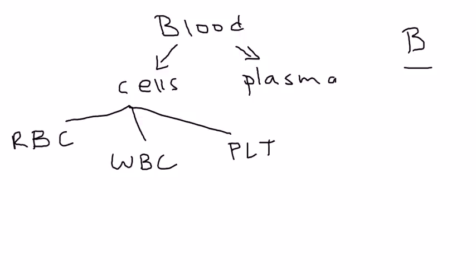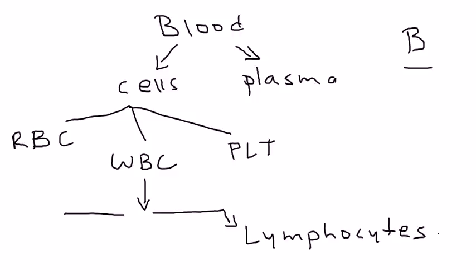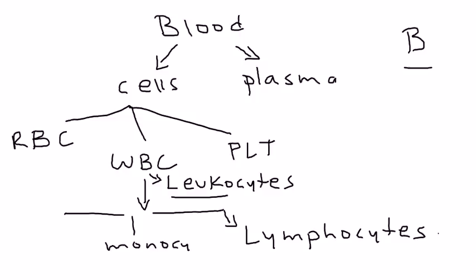The white blood cell is really at the heart of this discussion, because white blood cells break down further into many different types. The point of this video is to talk about one type of white blood cell called a lymphocyte — not to be confused with leukocytes, which is what white blood cells are often referred to, meaning 'white.' Other types include monocytes, and so on.